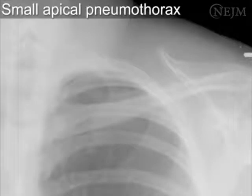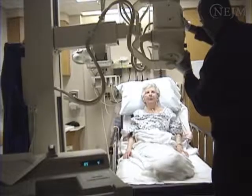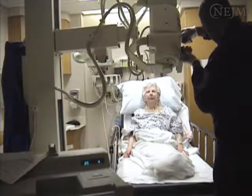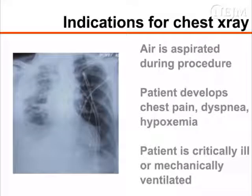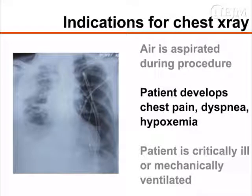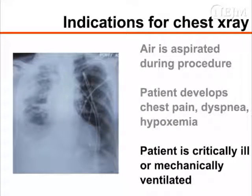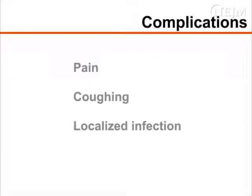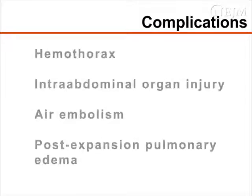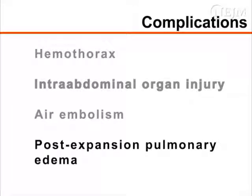Pneumothorax is uncommon after thoracentesis and, when present, it rarely requires the placement of a chest tube. Chest radiographs are not required after simple, uncomplicated procedures. Radiography of the chest should be performed if air was aspirated during the procedure, if chest pain, dyspnea, or hypoxemia develops, or if the patient is critically ill or undergoing mechanical ventilation. Other complications of thoracentesis include pain, coughing, and localized infection. More serious complications include hemothorax, intra-abdominal organ injury, air embolism, and post-expansion pulmonary edema.